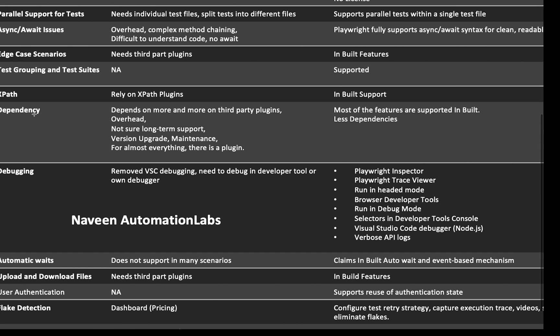Dependencies: Cypress depends more and more on third-party plugins, which is again an overhead. You're not sure of long-term support for those plugins, you have to perform version upgrades for each, and you have to check backward compatibility. The maintenance burden for almost everything in Cypress involves a plugin. Most companies and users get frustrated by the amount of maintenance required to support these plugins. If one plugin is no longer supported, you have to find another. Playwright, on the other hand, has most features inbuilt with fewer dependencies.